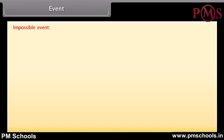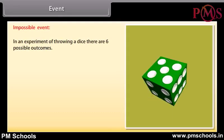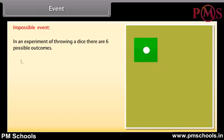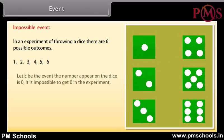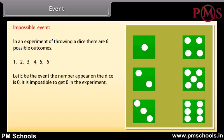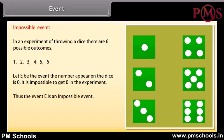Impossible event: To understand it, let's take an example. In an experiment of throwing a dice, there are 6 possible outcomes: 1, 2, 3, 4, 5, 6. Let E be the event that the number appearing on the dice is 0. It is impossible to get 0 in the experiment. Thus, the event E is an impossible event. The probability of an impossible event is 0.